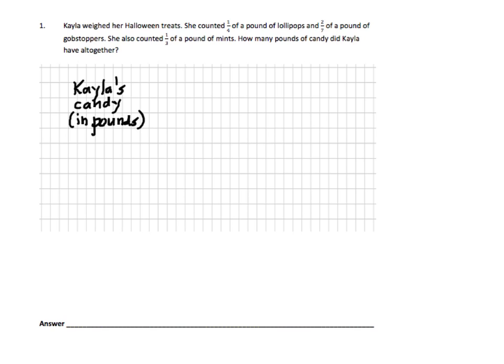Let's read the word problem to figure out who and what's involved. It seems as if lollipops and gobstoppers are Halloween treats. This is about Kayla's Halloween treats so far. She also counted one-third of a pound of mints, which seems to be a Halloween treat as well. So how many pounds of candy did Kayla have altogether? This seems to be about Kayla's candy in pounds. Let's write that down as our label.